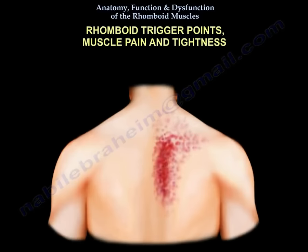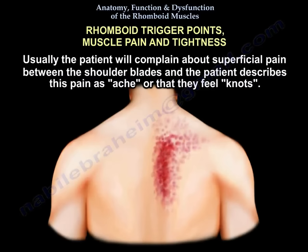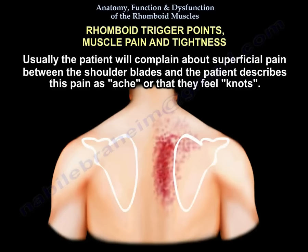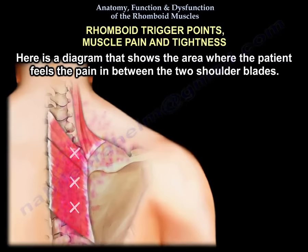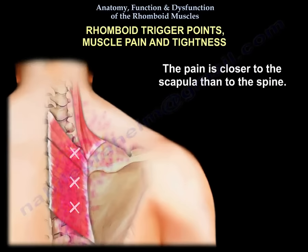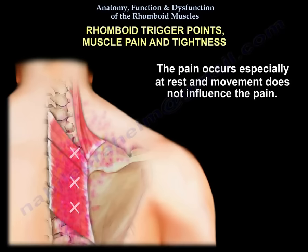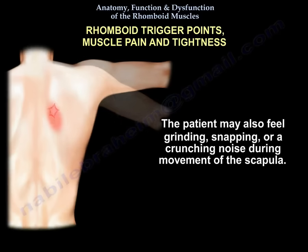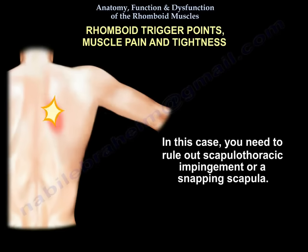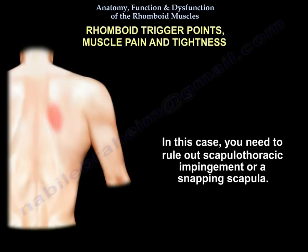Another common entity is rhomboid trigger points — muscle pain and tightness. Usually the patient complains about superficial pain between the shoulder blades, describing it as an ache or feeling knots. Here is a diagram showing the area where the patient feels pain between the shoulder blades. The pain is closer to the scapula than to the spine. The pain occurs especially at rest, and movement does not influence it. The patient may also feel grinding, snapping, or a crunchy noise during movement of the scapula, in which case you need to rule out scapulothoracic impingement or a snapping scapula.